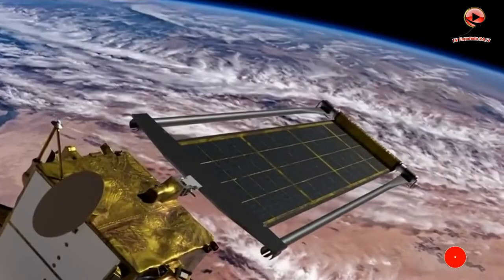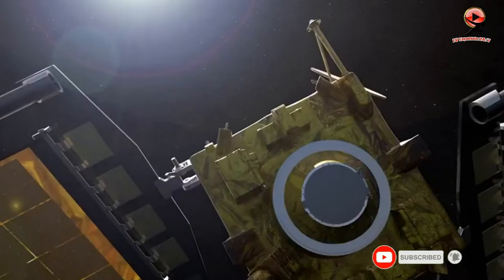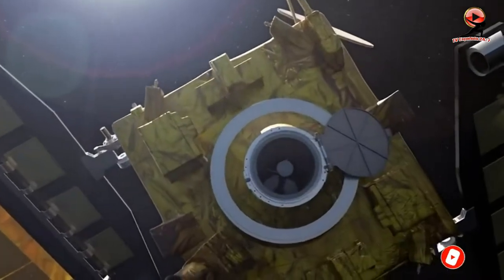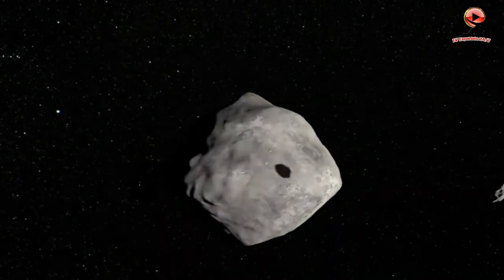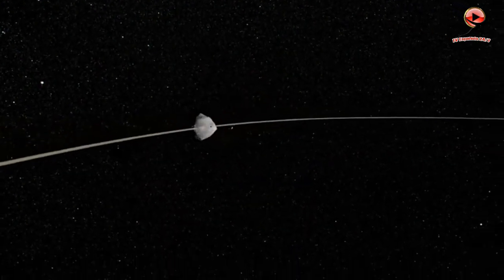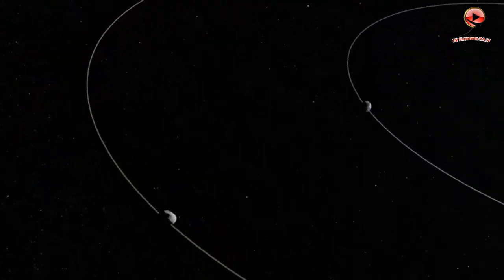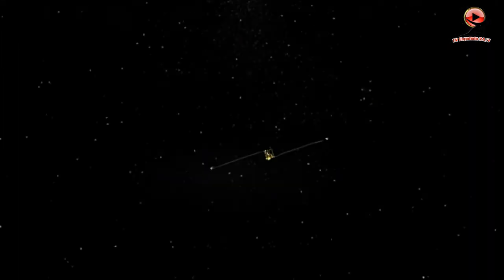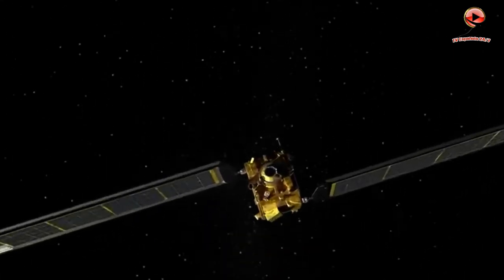The mission target is Dimorphos, a small moon orbiting the Near-Earth Asteroid Didymos. This will be NASA's first full-scale demonstration of this type of technology for planetary defense. It will also be the first time humans have altered the dynamics of a solar system body in a measurable way, according to the European Space Agency.